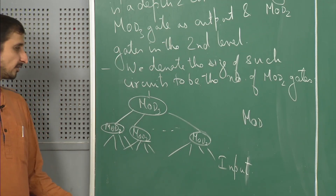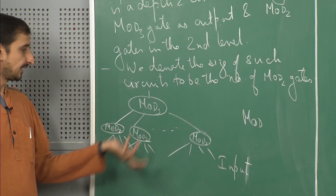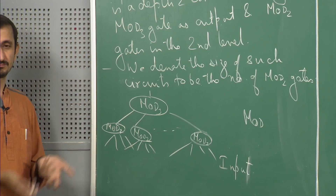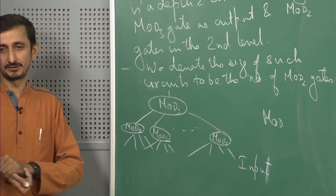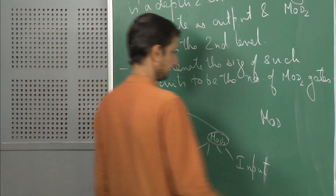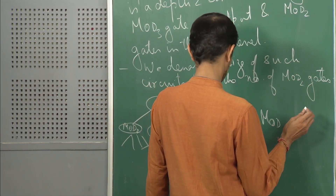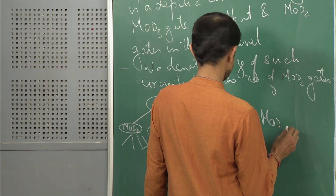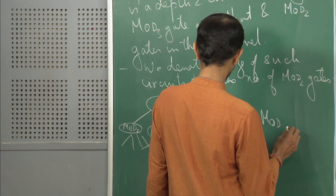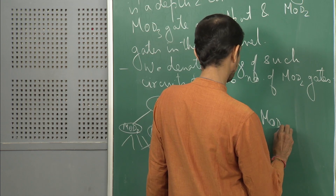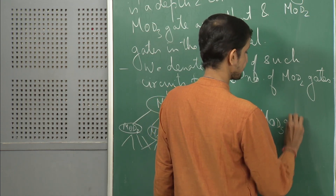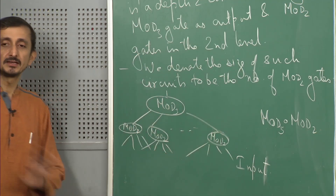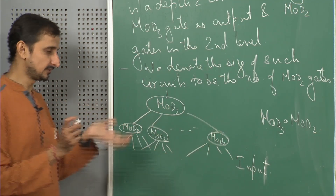An AND or OR gate can be simulated by a mod2 gate. By definition, this circuit does not have any other type of gates — no AND, OR, or NOT — nothing. This is how mod3·mod2 is defined.